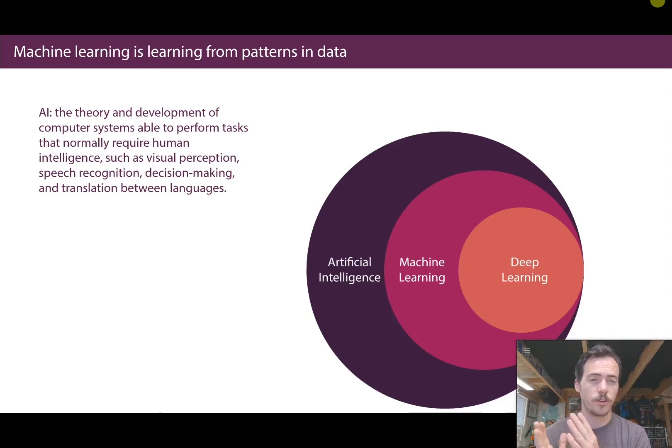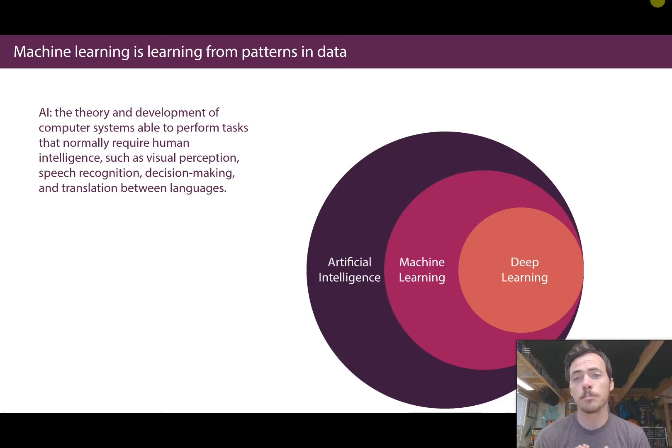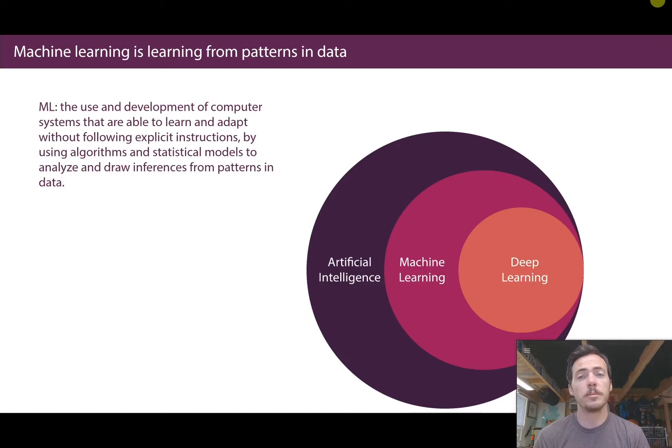Let's get started with some essential definitions, because machine learning gets used interchangeably with words like artificial intelligence and deep learning. When we talk about AI, artificial intelligence, here's the definition: the theory and development of computer systems able to perform tasks that normally require human intelligence, such as visual perception, speech recognition, decision making, and translation between languages. That's artificial intelligence — anytime you get the computer to do something that normally a human would have to do.